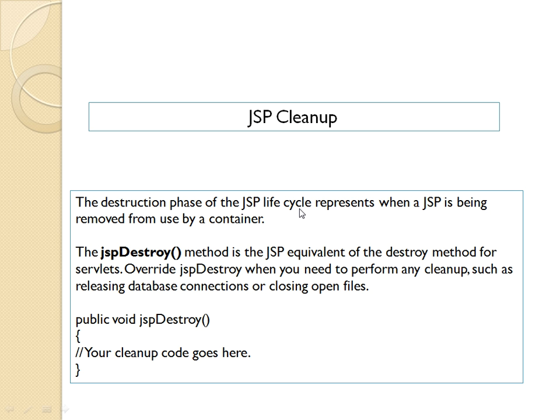Once everything is processed and the result is obtained, the destruction phase of the JSP lifecycle comes. It represents when the JSP is being removed from use by the container. The JSP destroy method is called — equivalent to the destroy method for servlets. This method is used to perform cleanup such as closing open database connections that were opened in the init method, and closing open files.